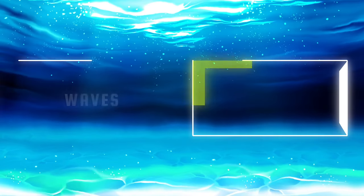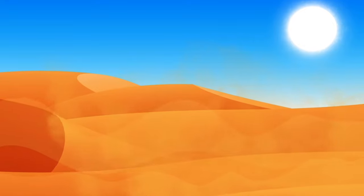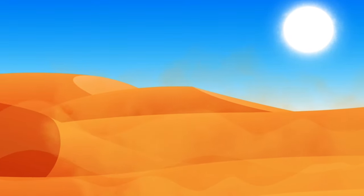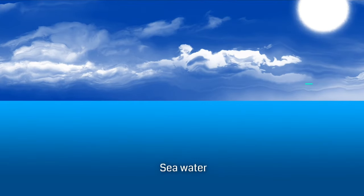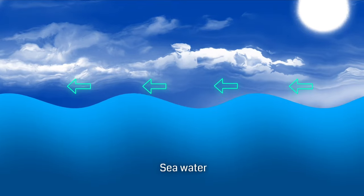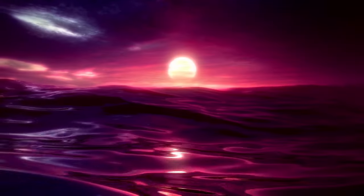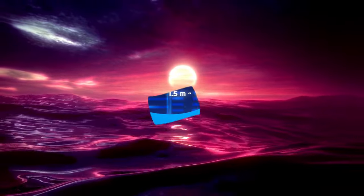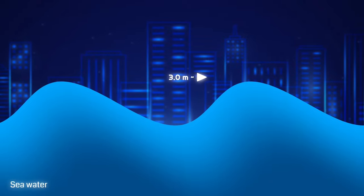Many of us don't know the difference between waves and tides. If the wind blows fast on the land, it hits the soil particles on its surface and creates dust layers. Similarly, when the wind hits the surface of the sea, it vibrates the seawater up and down, causing it to rotate and form waves. These waves move from the center of the ocean towards the coast according to wind speed. Usually, this wave is 1.5 meters to 3 meters high.